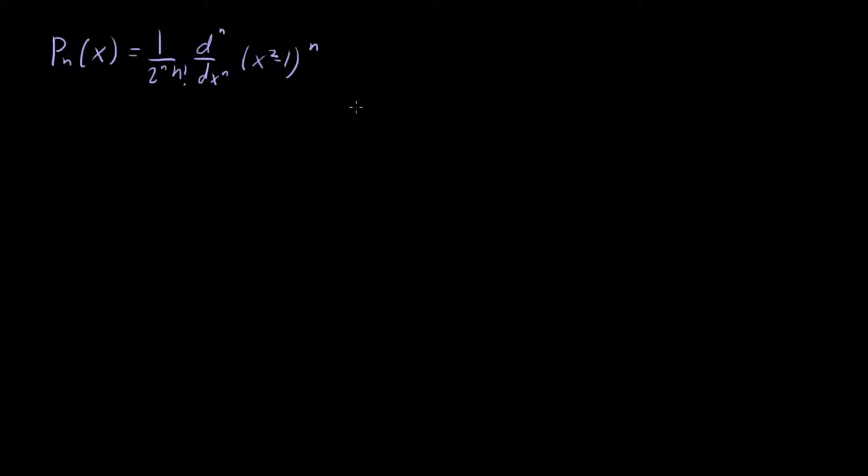Before we go through and actually calculate a few of these, it's good to take a second and think about just qualitatively what's going on here. We can rewrite this term in a way which maybe gives us a little more intuition. We can just factor it. When we factor it, we get (x - 1)^n (x + 1)^n, or if you like, both of these guys to the n.